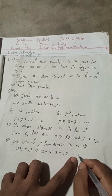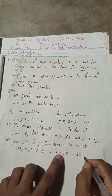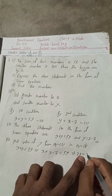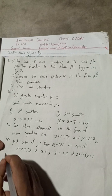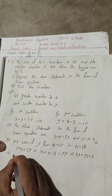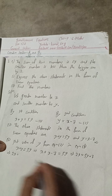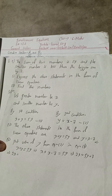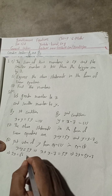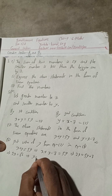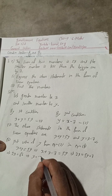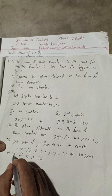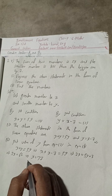This gives us 2x equals 59 plus 7, which is 66. So x equals 66 divided by 2, which equals 33. This is our x value — that means 33 is the greater number.